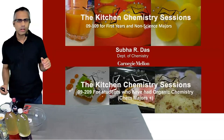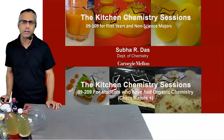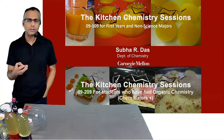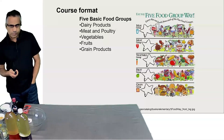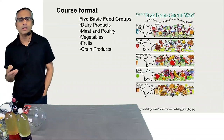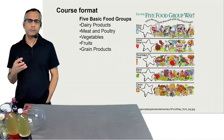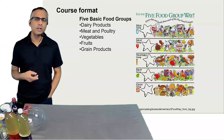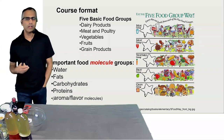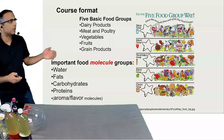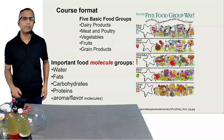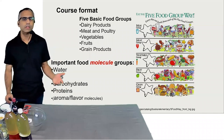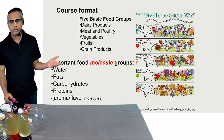A number of years ago, I started a course to teach chemistry using food and food molecules. Rather than thinking about food in terms of basic food groups — dairy, meat, proteins, poultry, vegetables — I wanted students to think about the important food molecule groups: water, fats, carbohydrates, proteins, and aroma and flavor molecules. This essentially covers the list of molecules we deal with in the lab.